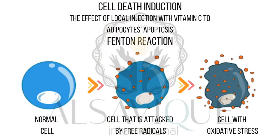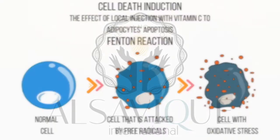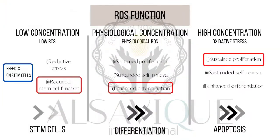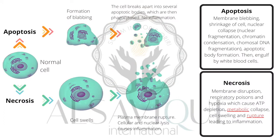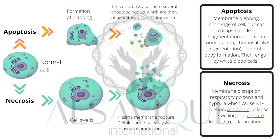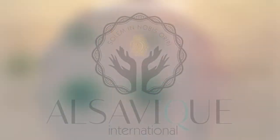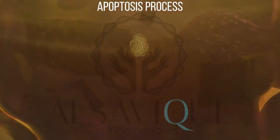Vitamin C, in the presence of the ferric ion, activates the Fenton's reaction. This reaction produces an optimal amount of free radicals that triggers the cell's apoptosis. Unlike necrosis, the process of apoptosis does not lead to the rupture of the cell's membrane and, as a consequence, to the inflammation. This ensures safety and no side effects.